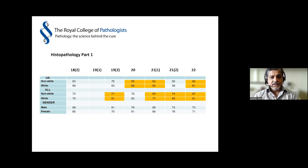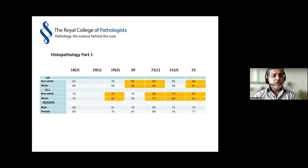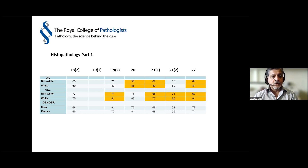For the histopathology Part 1 exam, which is a purely multiple choice exam, there seems to be an increasing differential attainment in the last three sittings or so, both in the UK and overall. So there's something to try and delve into more to see what the reason might be.